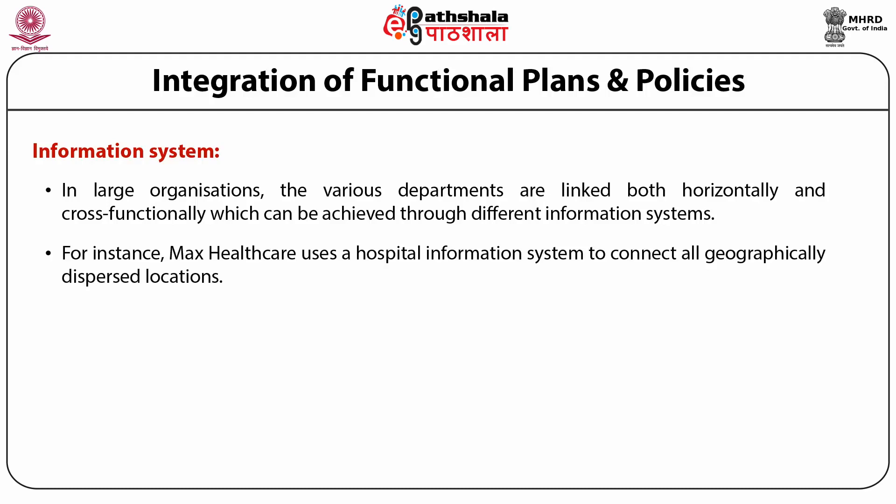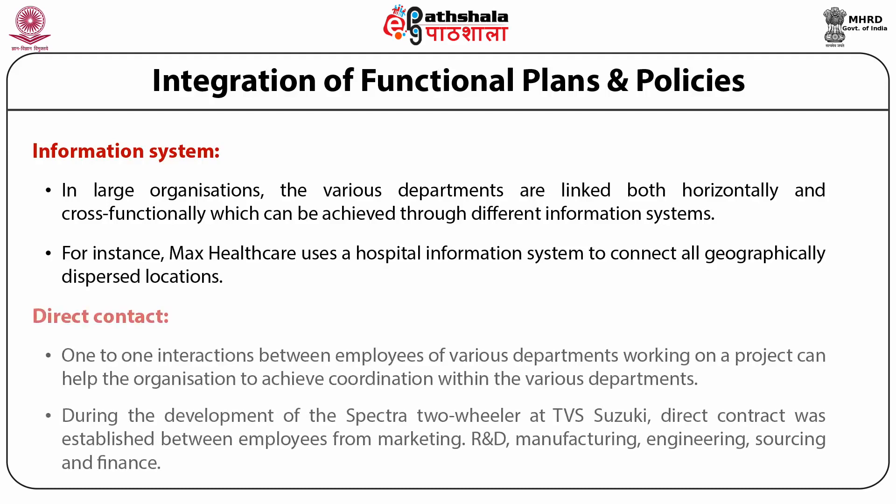The second common mechanism is direct contact. One-on-one interaction between employees of various departments working on a project can help organizations achieve coordination. Today, with the advent of technology such as video conferencing, even people sitting at diverse locations can interact with each other and share issues of mutual interest. Such direct interaction helps to minimize bias or any point of conflict, thereby ensuring better coordination among people of various departments and teams.